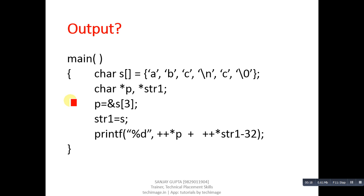This is the first code segment. You have to identify its output. You can see the first statement is containing a string into s, then two pointers p and str1 are declared. Then s of three's address is assigned into p, then s is copied into str1.